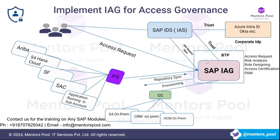To be able to do access governance for cloud applications as well as on-premise applications, SAP developed the solution called SAP IEG, and this is a fully cloud-based solution. Now, for people who are not aware of what access governance is, there are two terms people often confuse: Identity and Access Management, and Identity and Access Governance.